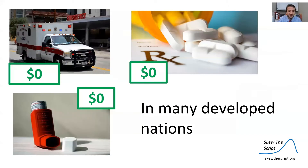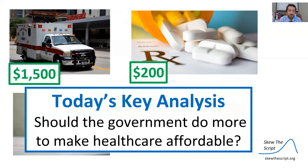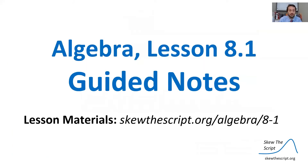As you can see from that video, in many developed nations, costs like ambulances, medicines, and inhalers are zero dollars. However, the average cost in America is much higher — fifteen hundred for an ambulance, medicines can cost up to two hundred dollars, inhalers also expensive. Our key analysis today: should the American government do more to make healthcare affordable? If you'd like to follow along with the lesson, check out the link below and feel free to print or download the guided notes.